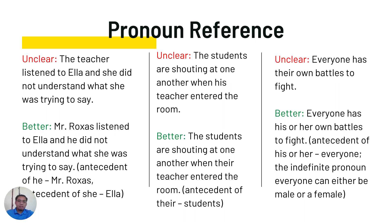In writing academic text, it is important to think of the pronoun and the antecedent that you are going to use. As much as possible, identify the specific name if you are referring to a person. Another example: 'The students are shouting at one another when their teacher entered' — the antecedent of 'their' is 'the students.' Another: 'Everyone has their own battles to fight.' Better: 'Everyone has his or her own battles to fight.' The antecedent of 'his or her' is 'everyone' — the indefinite pronoun that can refer to either male or female.